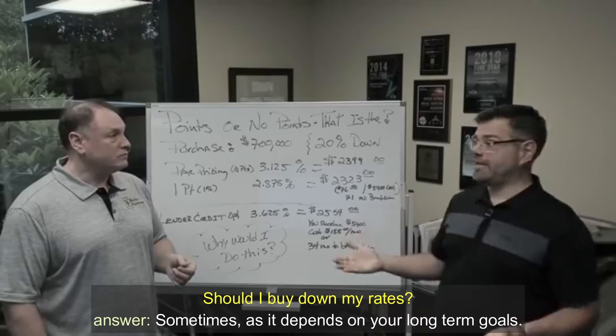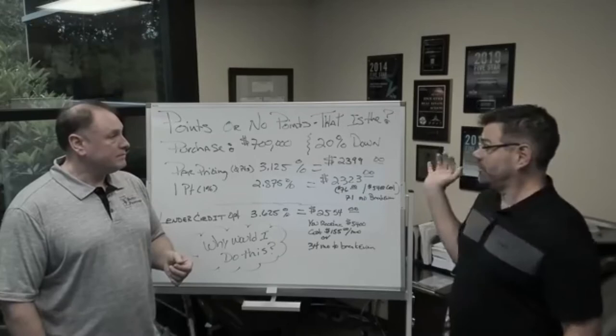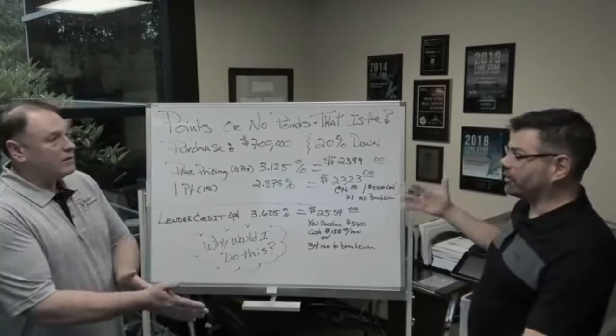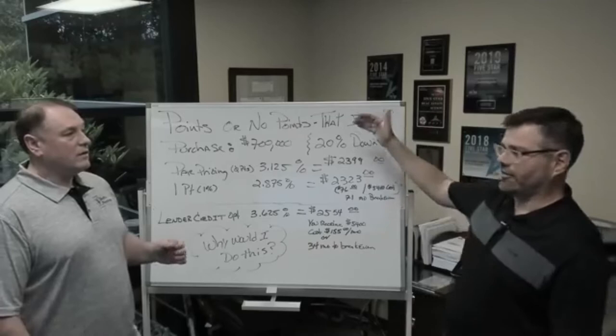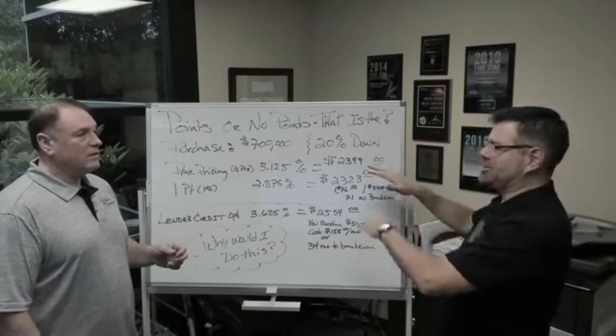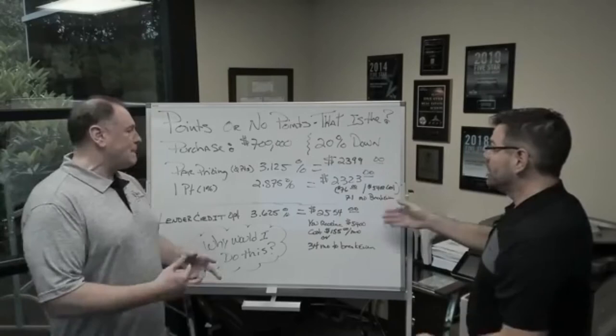It depends on your long-term goals, really. That's the first question I ask: how long will you be in the house? How long will you own this house? We came up with an example that will really show this. We did a $700,000 purchase price with 20% down. This math is going to make sense whether you buy a $700,000 house or a $400,000 house, whether you put 20% down or 10% down. It should be similar as far as what we call the recoup time.